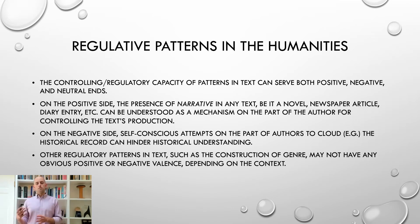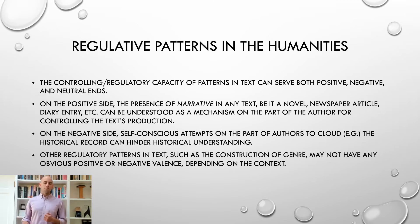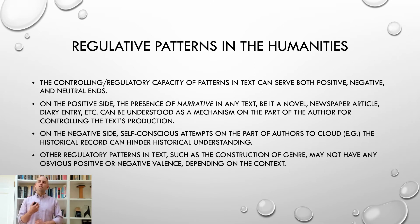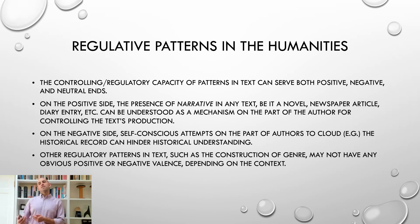When we observe a pattern in a textual corpus, we aren't just getting a better handle on how to explain its content — we're also getting a handle on the mechanisms through which the production of the corpus is regulated and controlled. That's the core argument of this lecture. It's worth noting that this controlling and regulatory capacity of patterns in text can serve positive, negative, and neutral ends, depending on context and on you the researcher. A positive example is the presence of narrative in a text — a narrative can be thought of as a mechanism for controlling text production. On the negative side, in history you might find self-conscious attempts by authors to cloud the historical record, which is also a pattern of regulation manifested in a corpus.